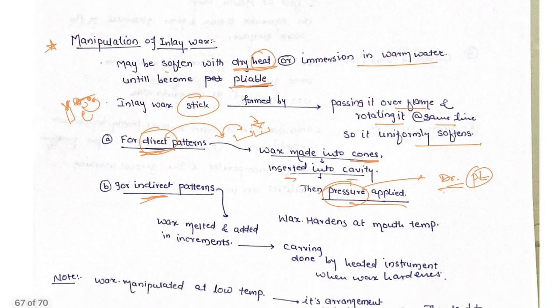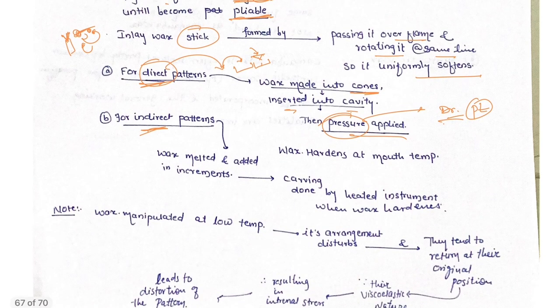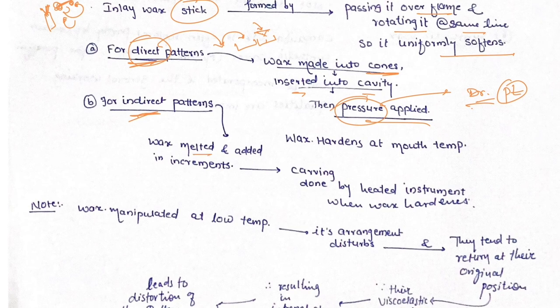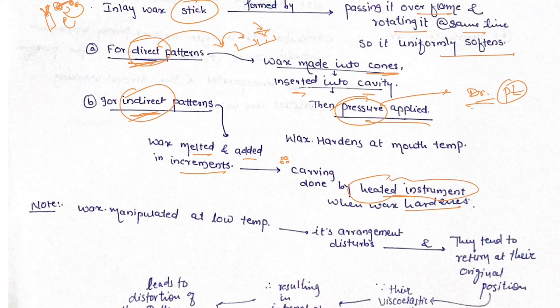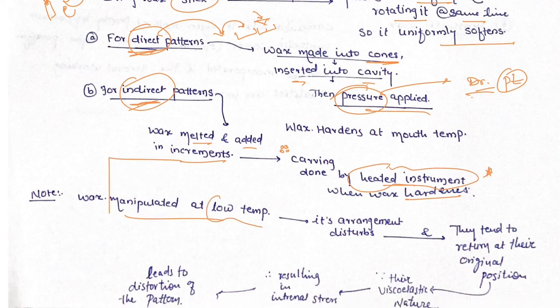For indirect pattern, wax is melted and added in increments. In indirect technique, we take small increments, place them, then carving is done by heated instrument when the wax is hard. Increments are placed, allowed to harden, and then carved with heated instruments.